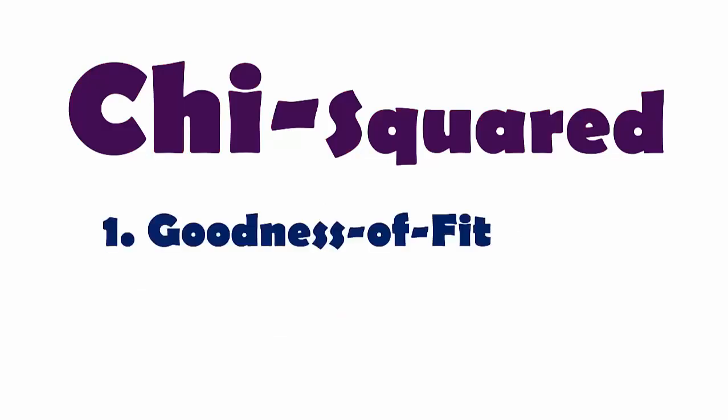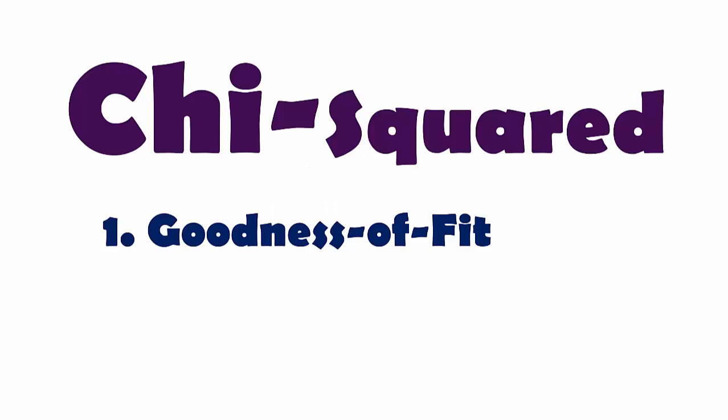And one of them is testing for goodness of fit. How observed value fit what you expect. Chi-squared distribution can help you test whether this coin is a fair coin. Whether the heads and tails show up in 50% 50% ratio as you expect.